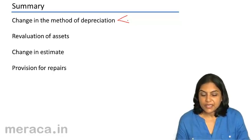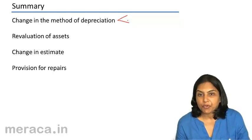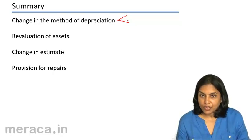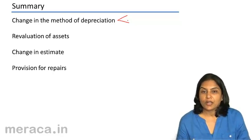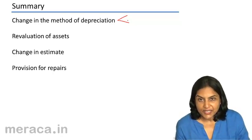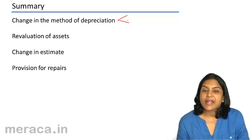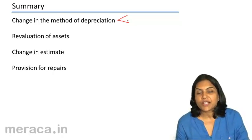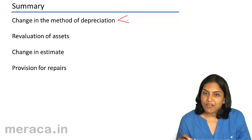Provisions for repairs. Sometimes we create a provision for repairs account where the total expenditure on repairs during the life of the asset is estimated and spread equally over the life of the asset.